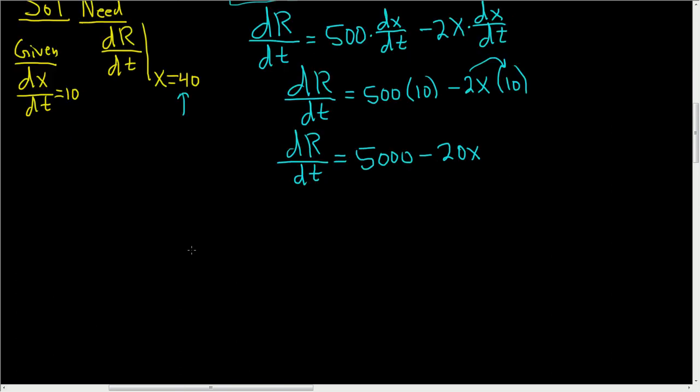So when X is 40, let me write it again down here, dR/dt when X is 40 is equal to, well, it's 5,000 minus 20 times 40. So this is 5,000,